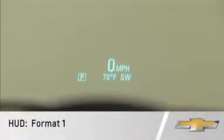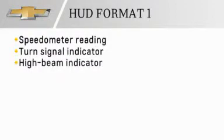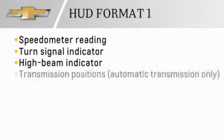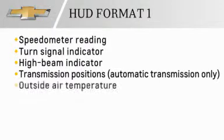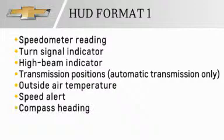Format 1 displays the speedometer reading, turn signal indicator, high beam indicator, transmission positions for automatic transmission vehicles only, outside air temperature, speed alert, and compass heading.